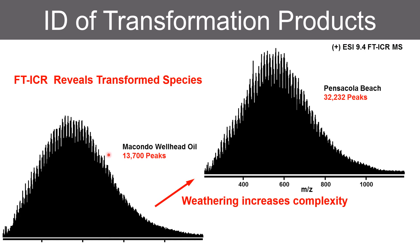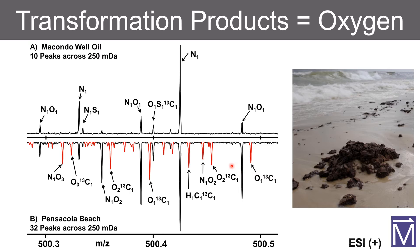In our first characterization of field samples in comparison to the Macondo wellhead oil, it was quite obvious that we were able to identify transformation products — the complexity of the field samples was two and a half times that of the original Macondo well oil. Those new species are revealed when you zoom to a single nominal mass and compare the parent mass spectrum of the Macondo well oil versus that of the Pensacola Beach extract. All of the red species are new peaks, most of which contain oxygen, so clearly there is an oxidative process occurring in the environment.